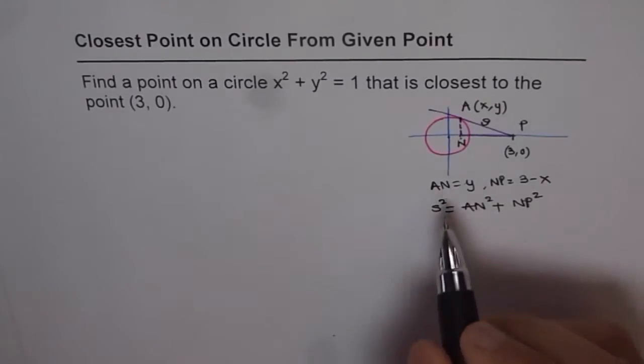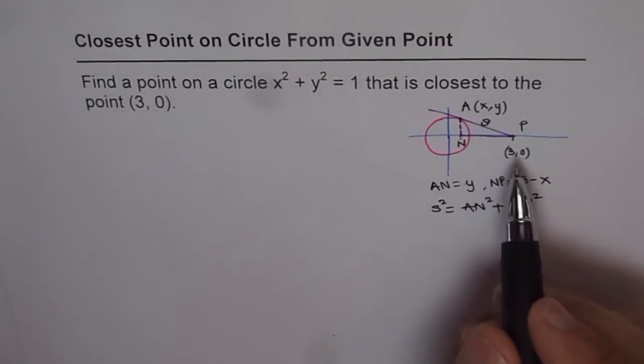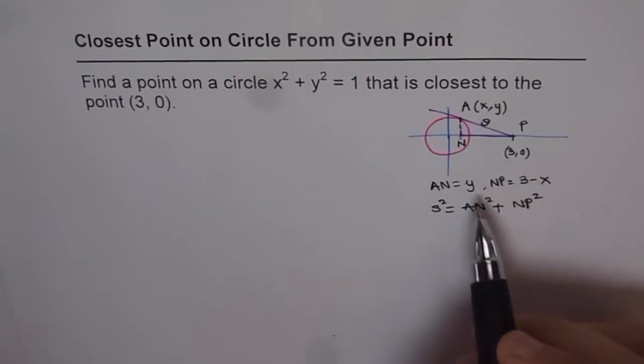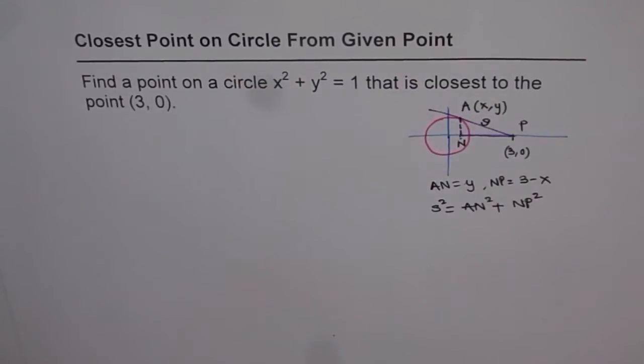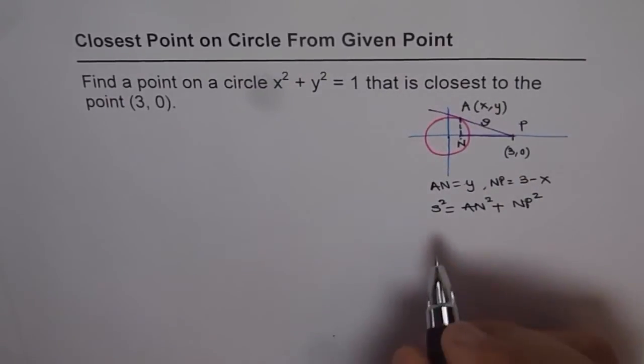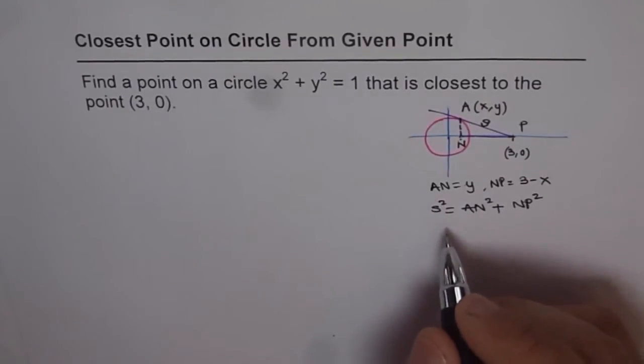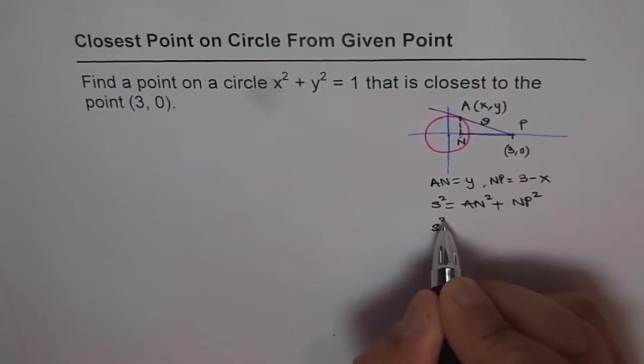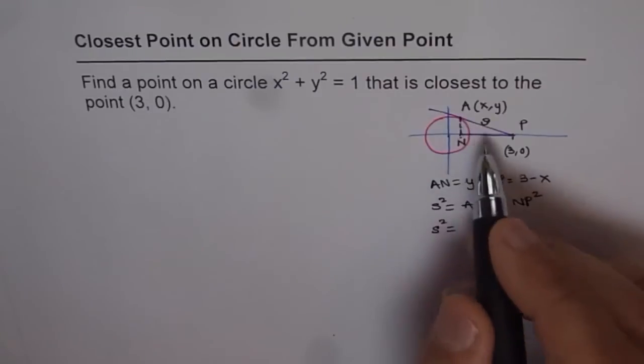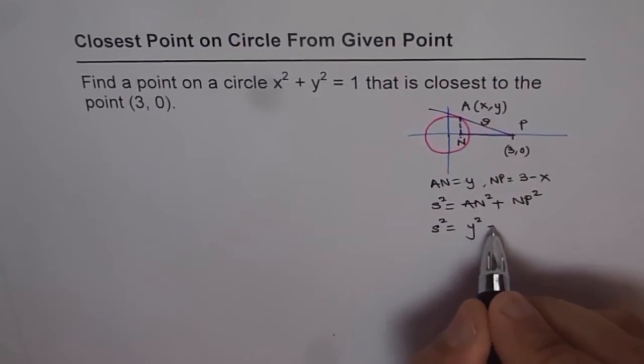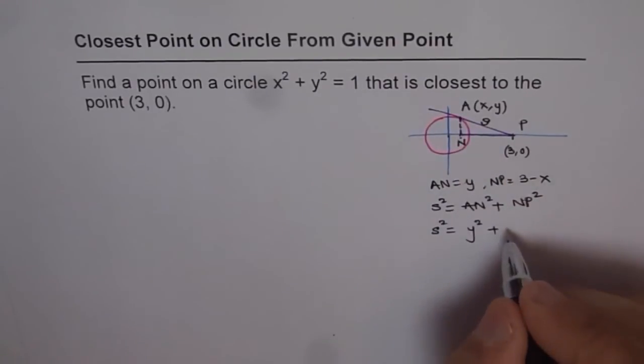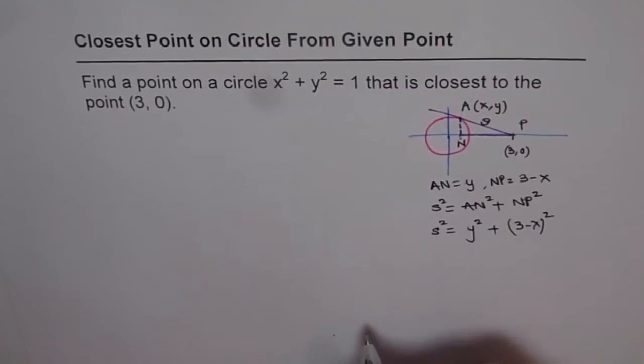That is the relation which we have, and fortunately for us that relation is between x and y, so we can actually solve the equation. So now let's try to solve it further. What we have here is S square equals to AN is y, so we have y square plus NP is 3 minus x, 3 minus x whole square.